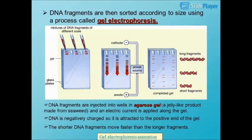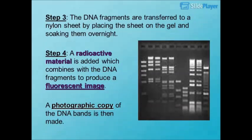Step 3: The DNA fragments are transferred to a nylon sheet by placing the sheet on the gel and soaking them overnight. Step 4: A radioactive material is added which combines with the DNA fragments to produce a fluorescent image.